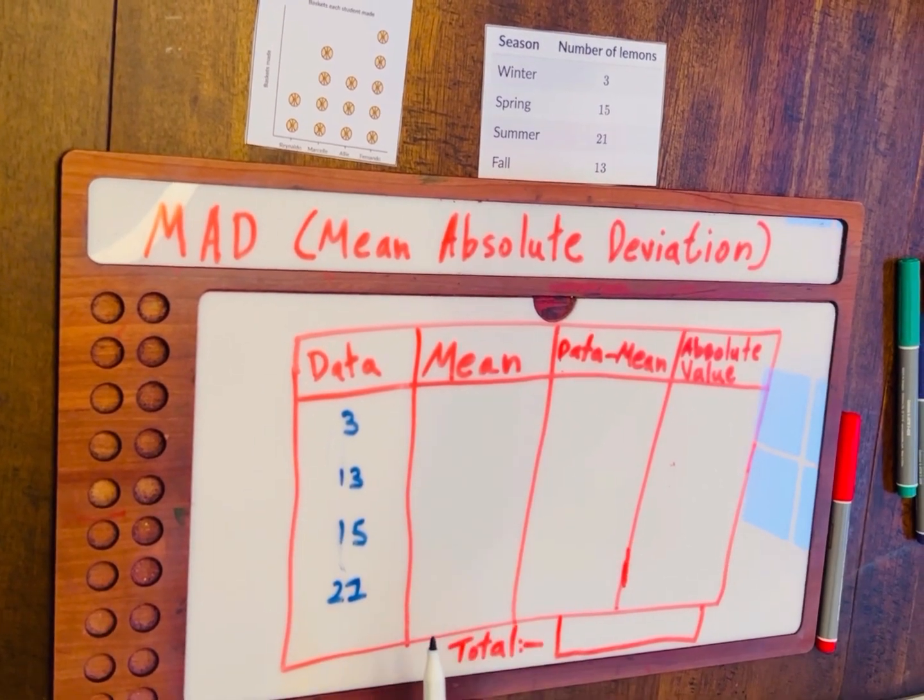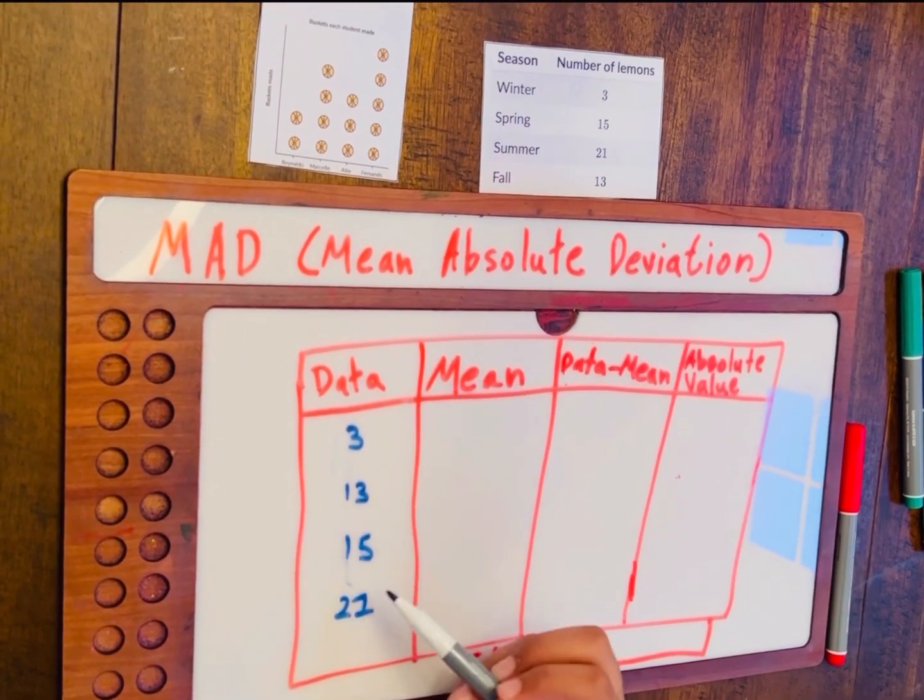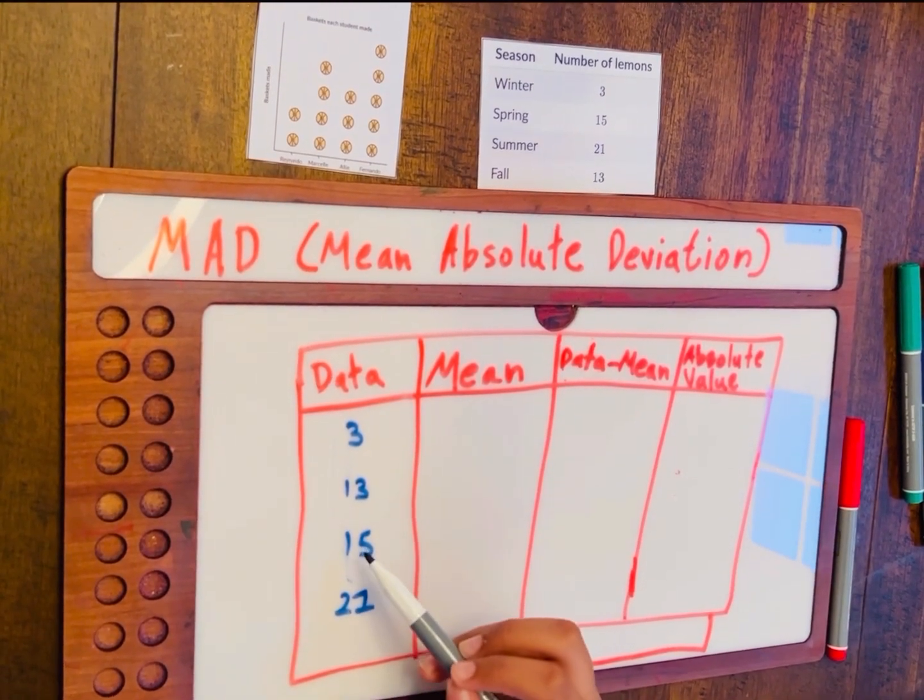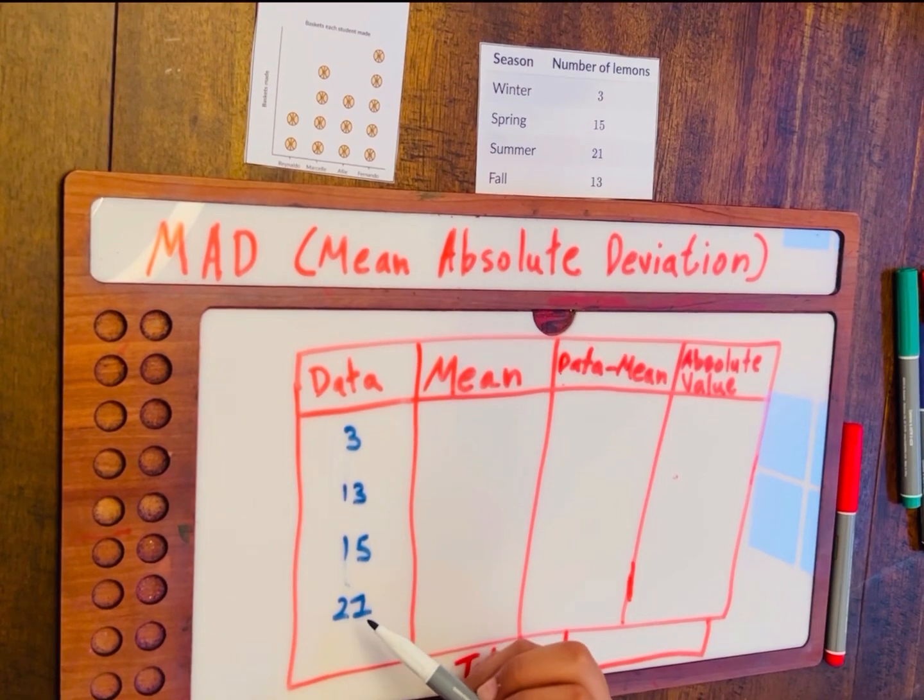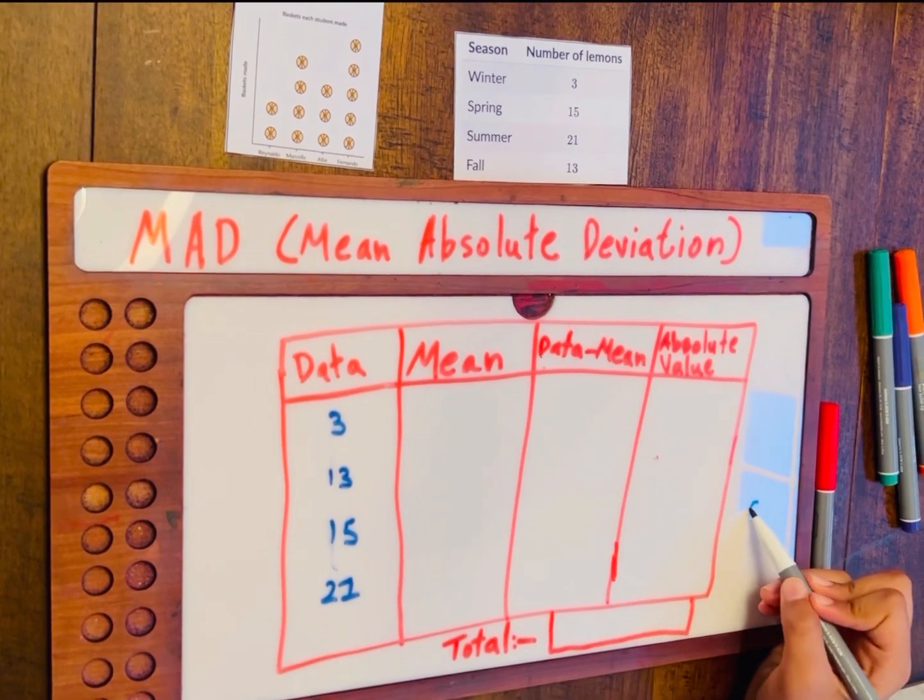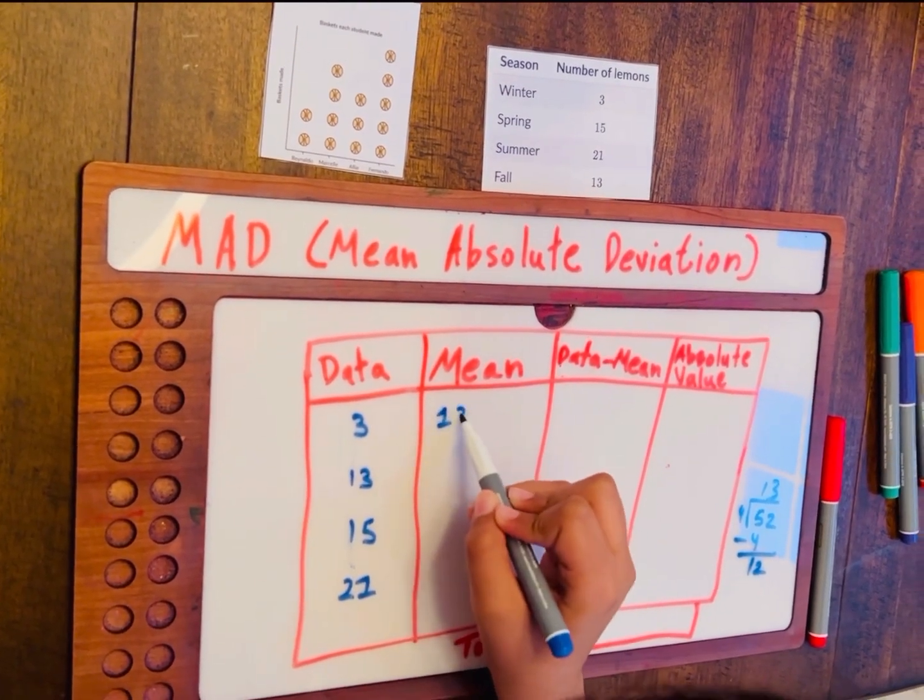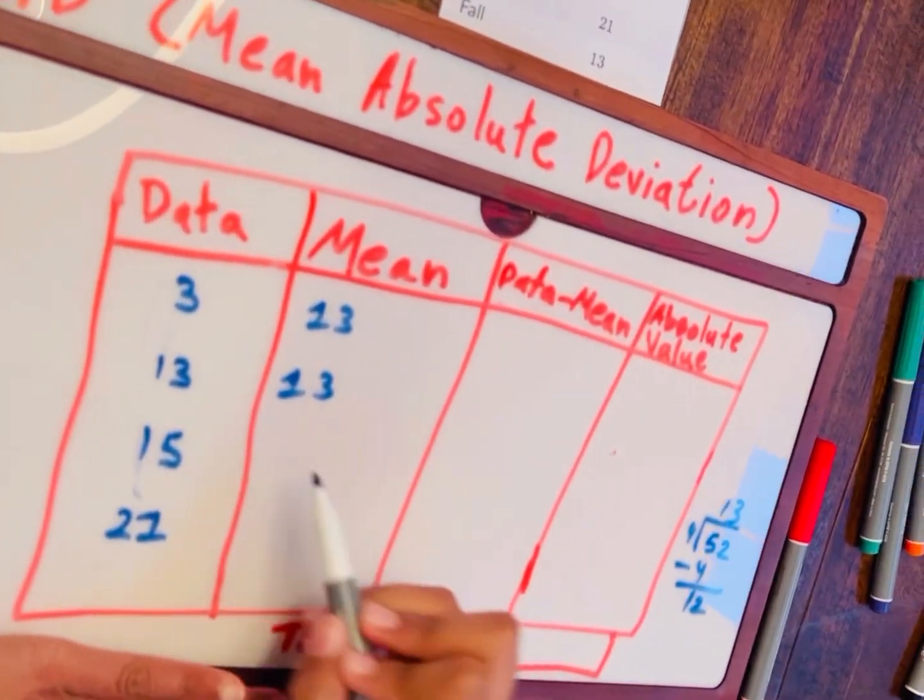Now, we have to find the mean. 3 plus 13 is equal to 16. 16 plus 15 is equal to 31. 31 plus 21 is equal to 52. No, we're not done there just yet. We have to divide 52 by 4. The answer to that is 13. So we have to write 13 for each number that we've written in the data.